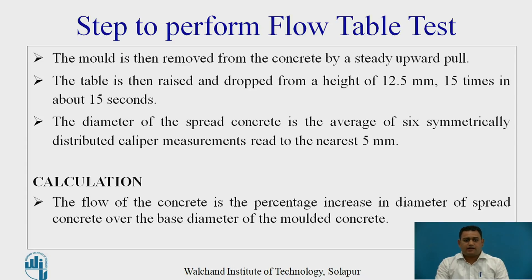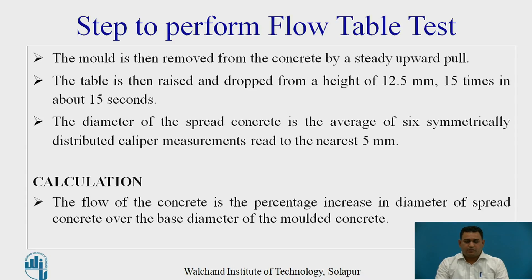The diameter of the spread concrete is measured as the average of 6 symmetrically distributed measurements, to the nearest 5 mm. The calculation to be carried out for the flow table test: the flow of concrete is the percentage increase in the diameter of the spread concrete over the base diameter of the mold. The base diameter of the mold is 25 cm.